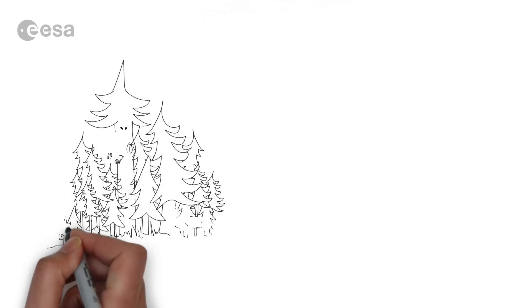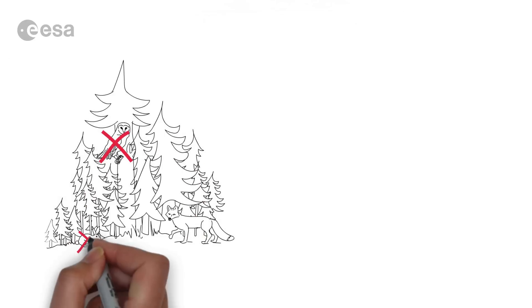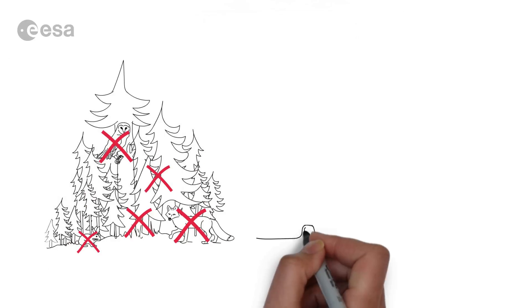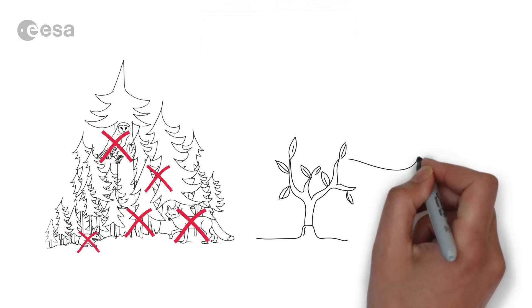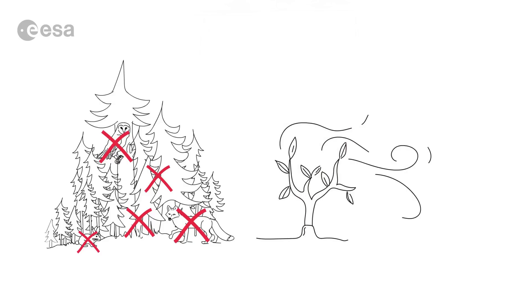However, if we continue deforestation we risk wiping out thousands of unique species and losing the green lung of our planet, providing us with the oxygen we breathe. But how can we avoid that?